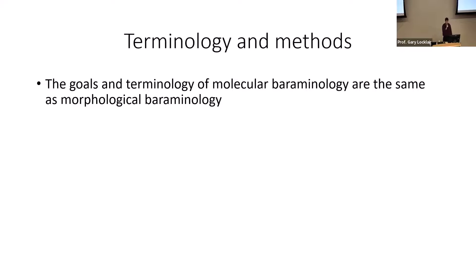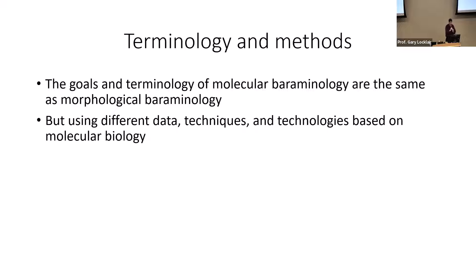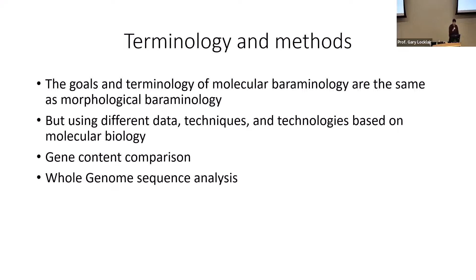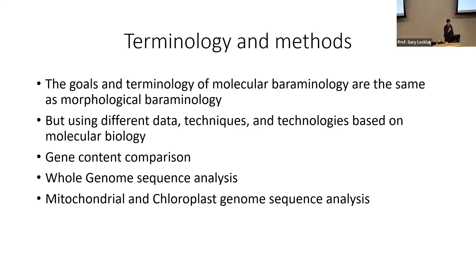The goals and terminology of molecular baraminology are the same as morphological baraminology. A baramin is a biblical kind — a group of organisms that can intermix with one another but not with other organisms; cats are one kind, dogs are one kind, horses another, humans another. Molecular baraminology uses different data, techniques, and technologies based on molecular biology: gene content comparison, whole genome sequence analysis with algorithms developed by Dr. Cserhati, and mitochondrial and chloroplast genome sequence analysis.